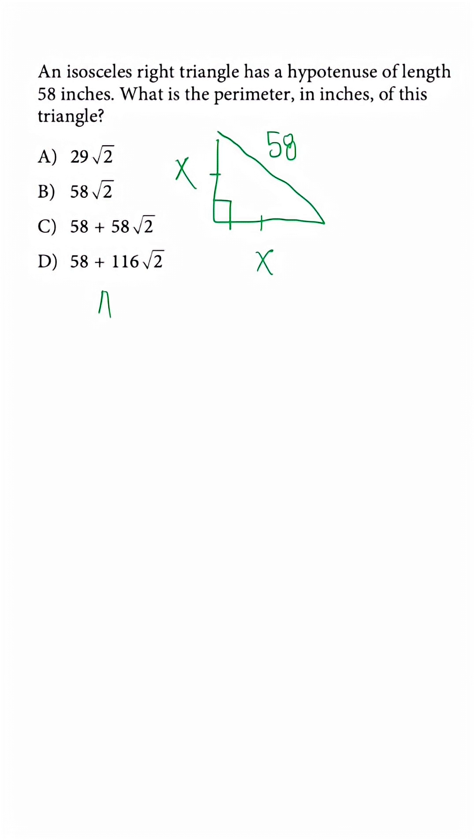So instead of using the formula a squared plus b squared is equal to c squared, it's going to be a little different. Our formula is going to be x squared plus x squared is equal to 58 squared.